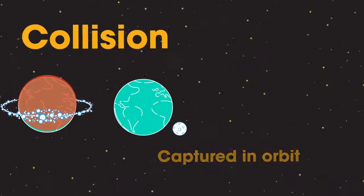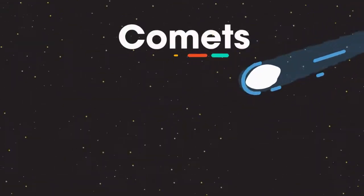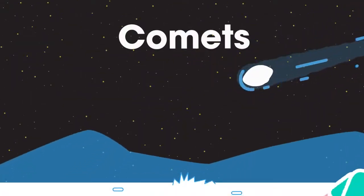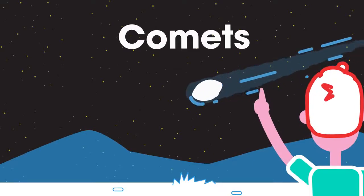There are other objects that are part of our solar system we rarely see: comets. People once thought the appearance of a comet in the night sky was a warning of a tragic event about to happen.